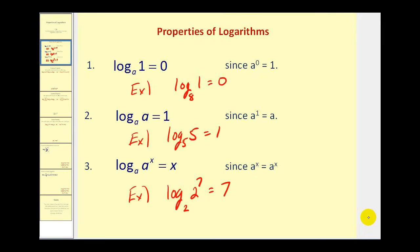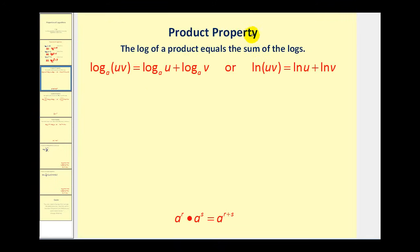The three main properties we want to look at in this video are the product, quotient, and power properties of logarithms. The product property states that the log of a product equals the sum of the logs. So if we have log base A of U times V, this is equal to log base A of U plus log base A of V.